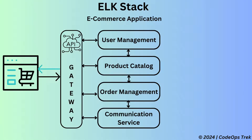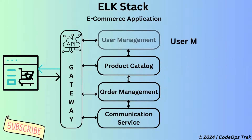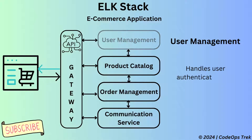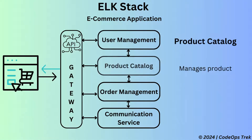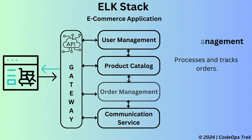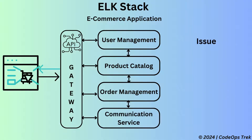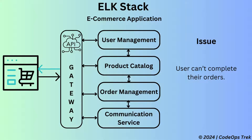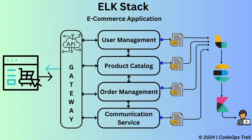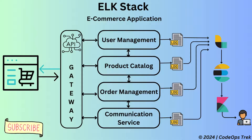Let's look at a practical example. Imagine you have an e-commerce application consisting of the following microservices: an API Gateway that manages requests and routes them to appropriate services; a User Management Service for user authentication and profiles; a Product Catalog Service for product information and inventory; an Order Management Service that processes and tracks orders; and a Communication Service that manages notifications and customer communication. Suppose you're experiencing issues with the application — perhaps users can't complete their orders. Here's how you can use the ELK stack to troubleshoot the problem.